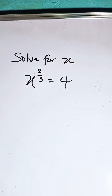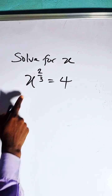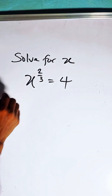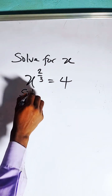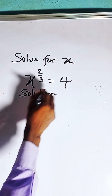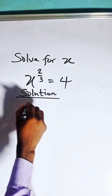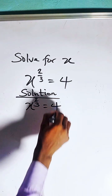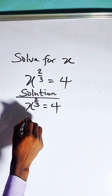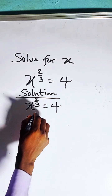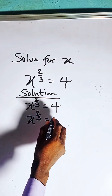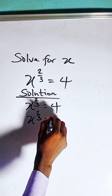The question says solve for x in this equation. We have x raised to the power of 2 over 3 equals 4. For 4, we can have it as 2 squared.